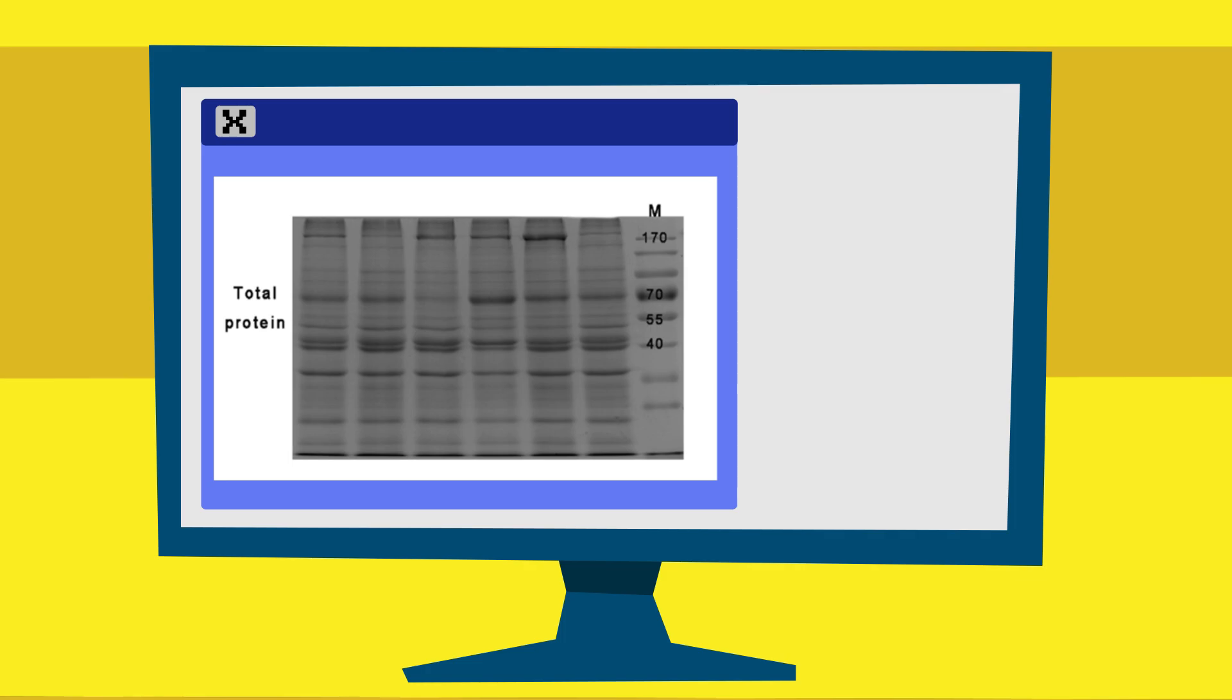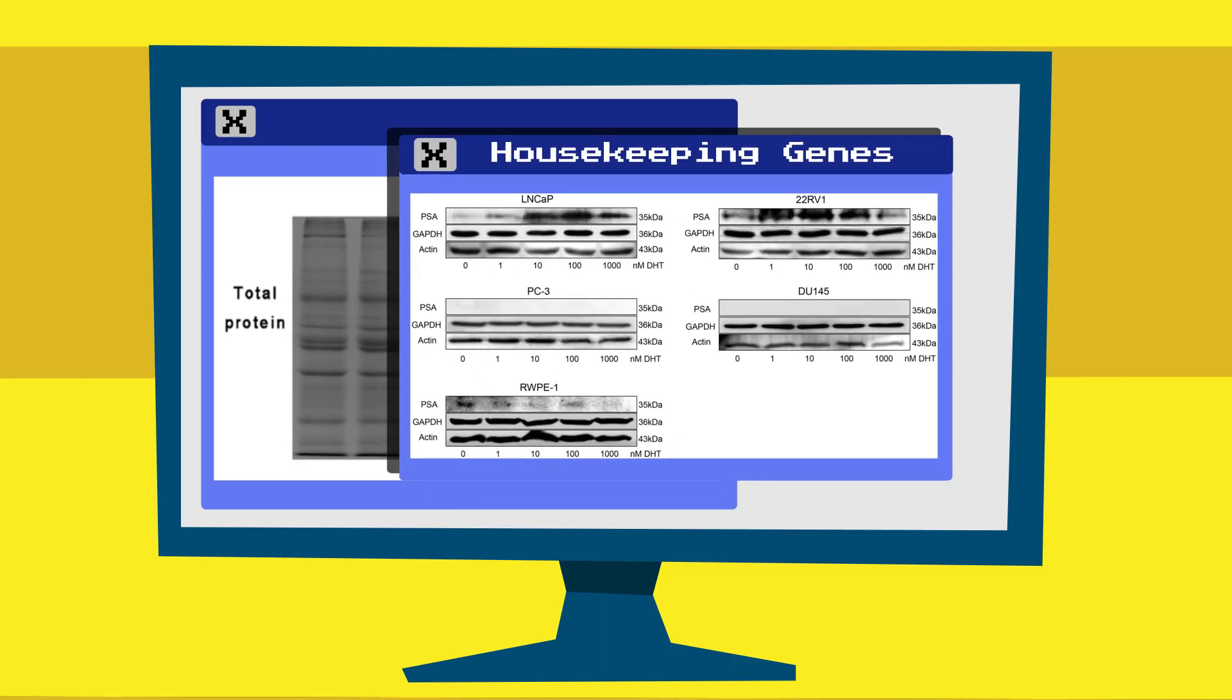Western blots are semi-quantitative, meaning that the samples are quantified relative to each other. Since total protein expression varies sample to sample, you'll need to normalize each sample to its total protein expression, the preferred method, or several ubiquitously expressed so-called housekeeping genes.